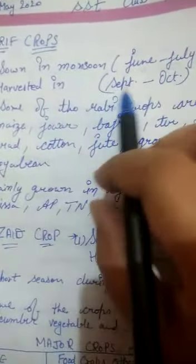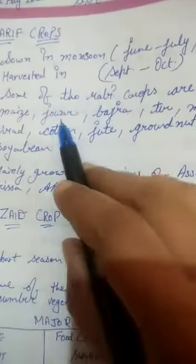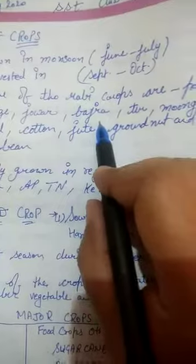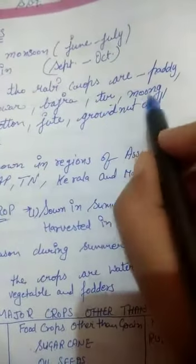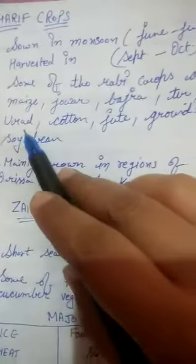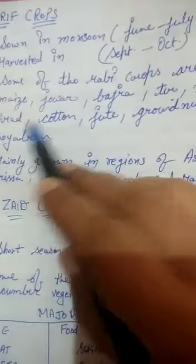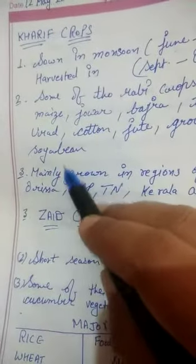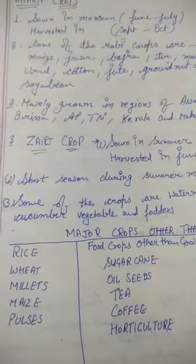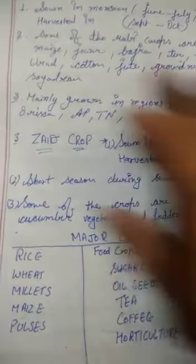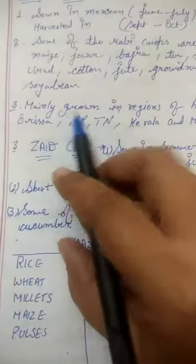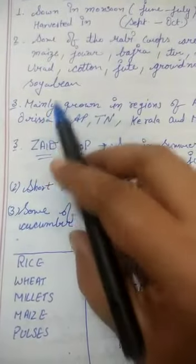Some of the Kharif crops are paddy, maize, jowar, bajra, toor, moong, urad, cotton, jute, groundnut, soya bean.